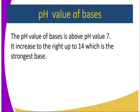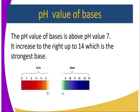What is the pH value of bases? The pH value of a base is above 7, increasing up to 14, which represents the strongest base. From neutral (pH 7) onwards to 14, those are bases, and we will look at more classification of bases with reference to the pH value.